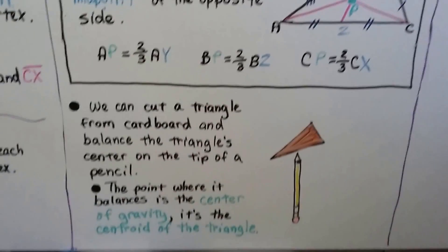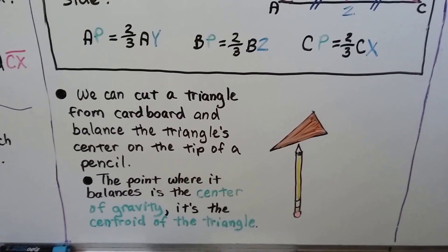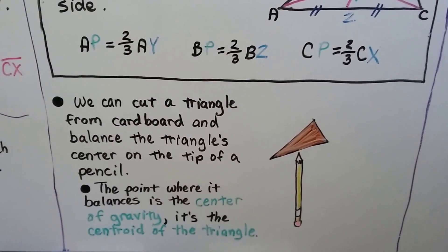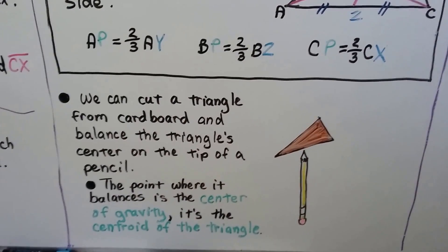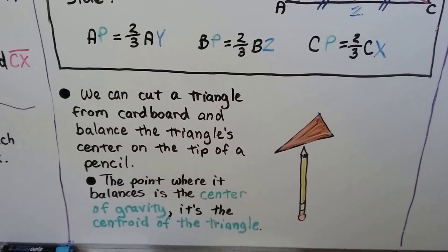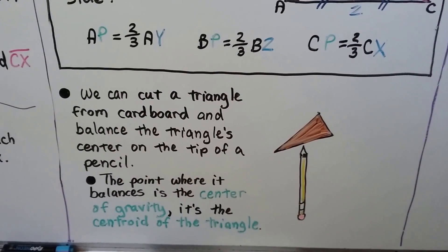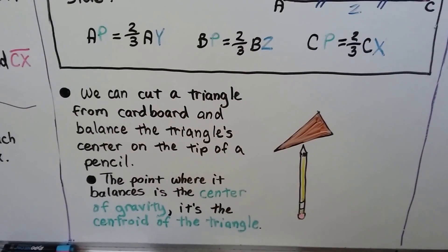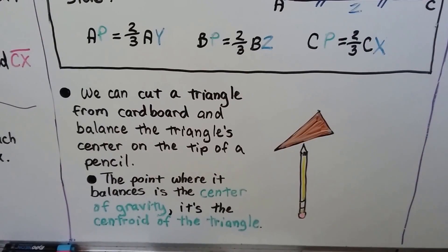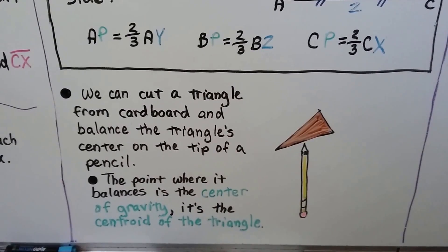So here's the fun part. We can cut a triangle from cardboard. Don't use paper, it's too flimsy. Use cardboard. And balance the triangle's center on the tip of a pencil. Try to find that sweet spot where that triangle will stay balanced. And the point where it balances is the center of gravity. It's the centroid of the triangle.